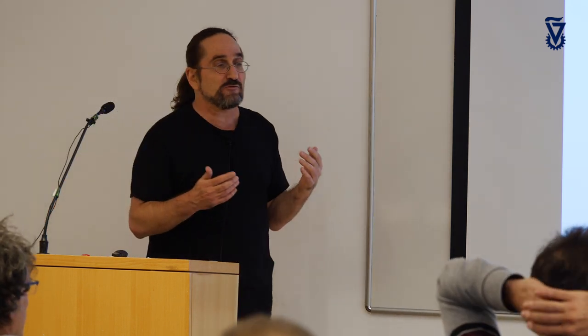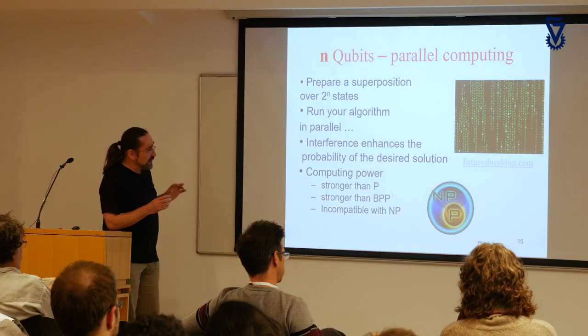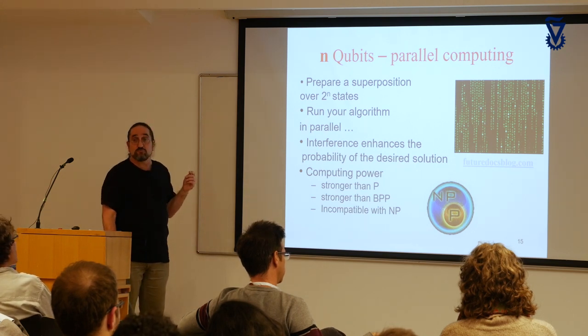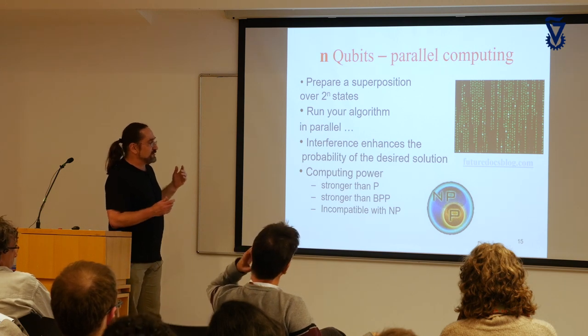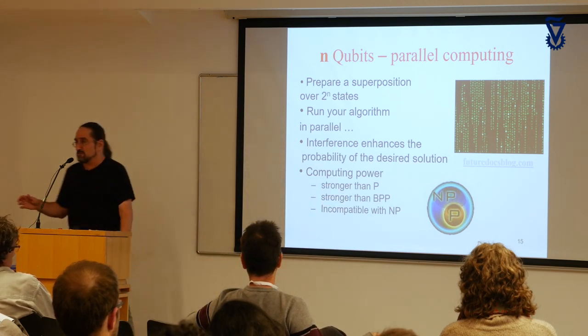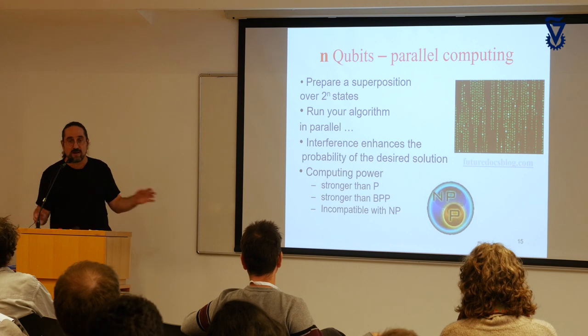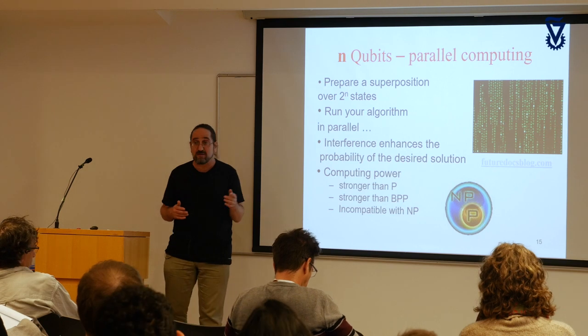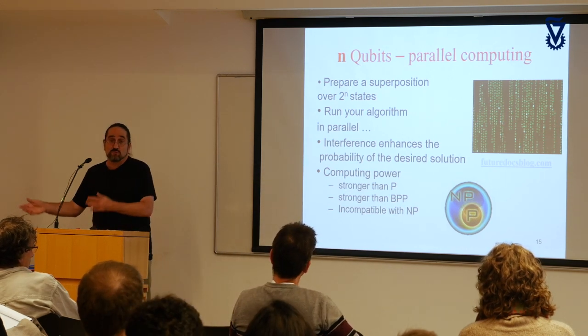This is the difference between what we call computational security, which relies on the difficulty of some mathematical problem, versus informational security, which does not depend on computational power. Now, what is the supremacy problem? I need to explain some complexity classes. The class P is everything that a classical computer can solve in polynomial time. Because if something takes exponential time with an input of 1,000 bits, it can never solve it.